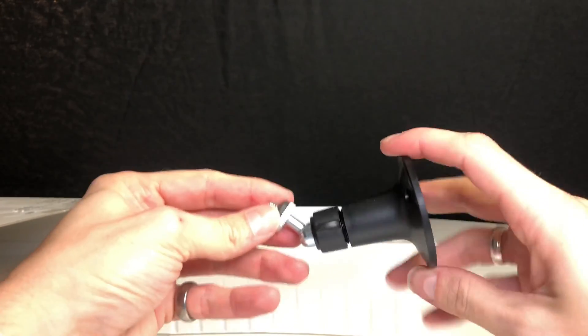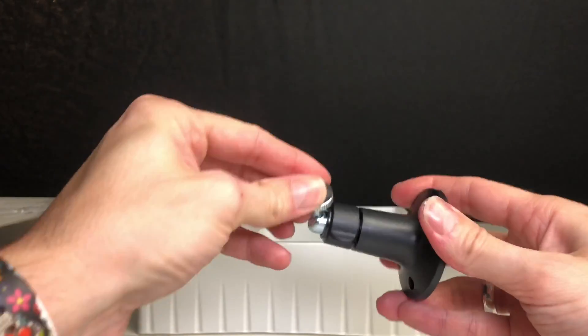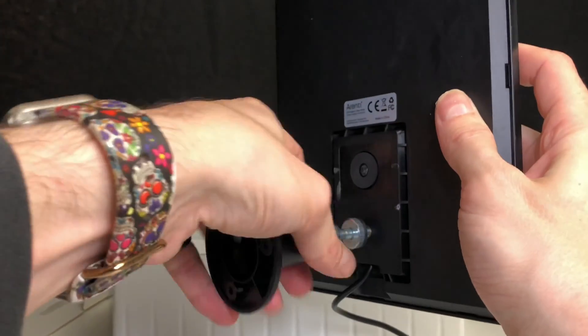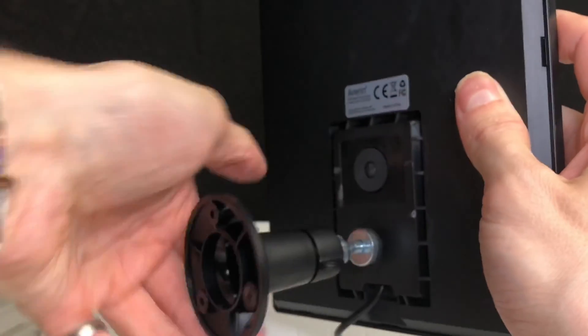This is the wall mount bracket that allows you to adjust the solar panel 360 degrees. You can simply twist and tighten or twist to loosen, rotate and tighten again.